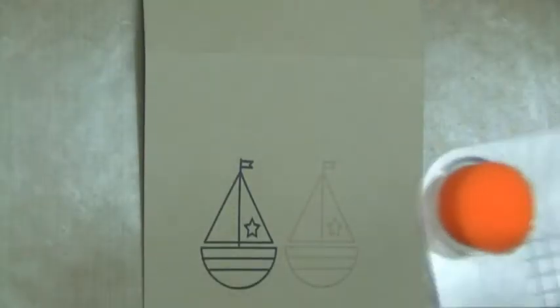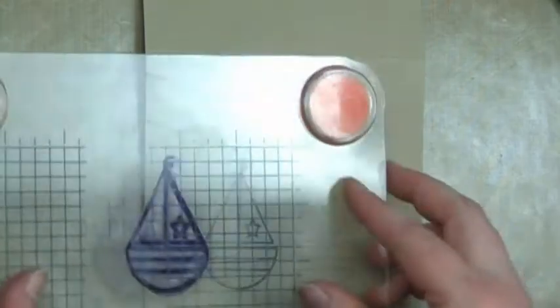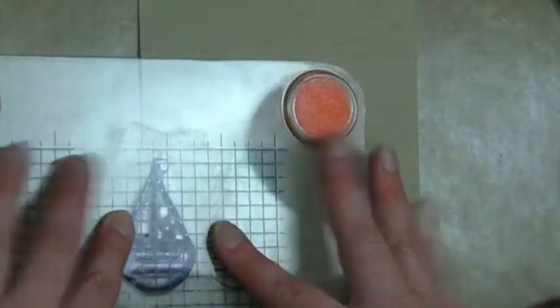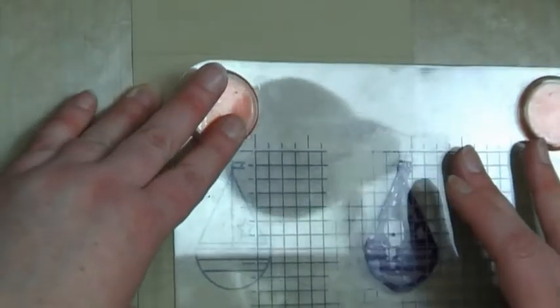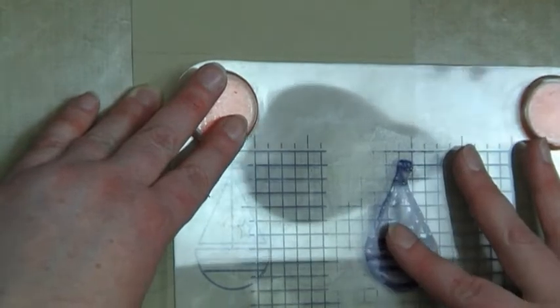You can see there that the watermark effect from Versamark really looks gorgeous on this, which is Peanut Cluster, and it will just give it a nice subtle effect while still allowing the paper piecing, which you'll see me put down in a moment, to pop off the card.